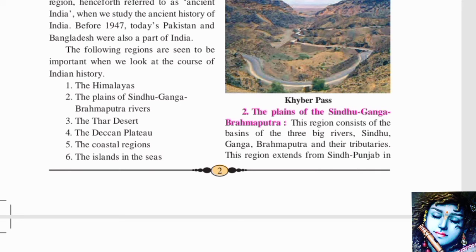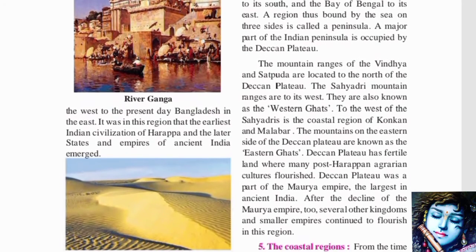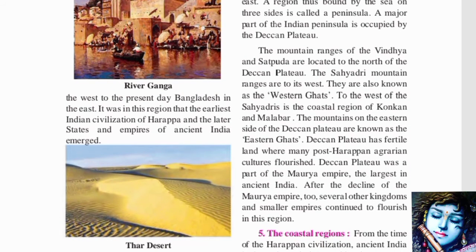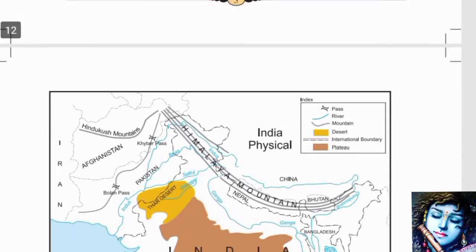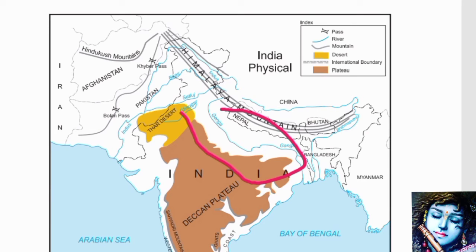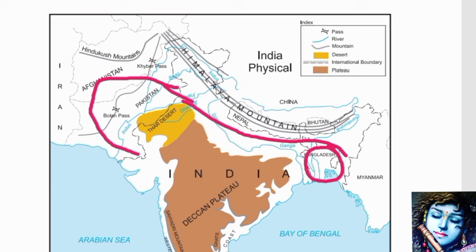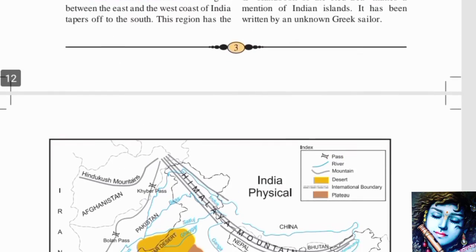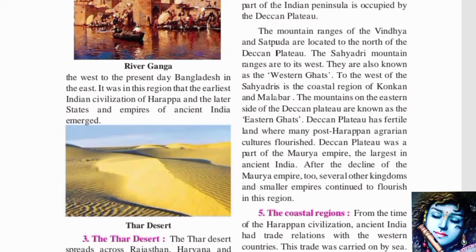The region extends from Sindh and Punjab in the west to present-day Bangladesh in the east. Sindh is in Pakistan, and Punjab is in both Pakistan and India. From the Pakistan area in the west to Bangladesh in the east — this entire area is called the plains of Ganga, Sindhu, and Brahmaputra rivers.